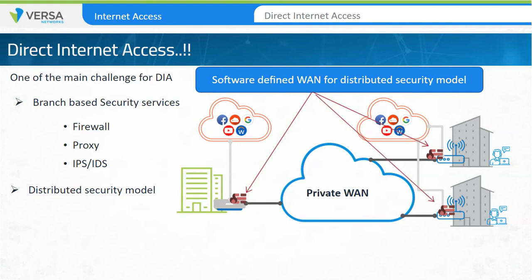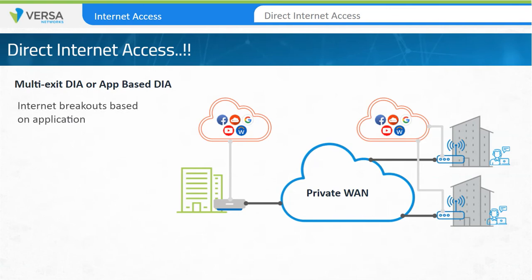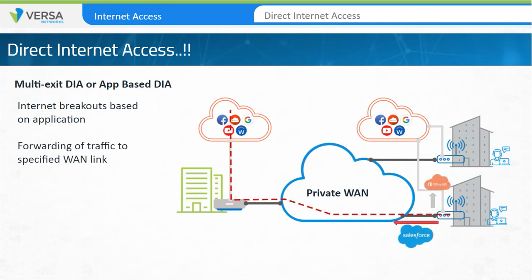Multi-exit, or app-based DIA, refers to the process of separating application traffic at the remote office and forwarding traffic over a specified WAN link based on application parameters. This process allows the forwarding of traffic across specified circuits based on the application type and not just the source and destination addresses.